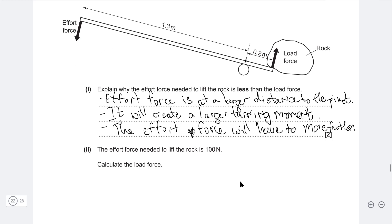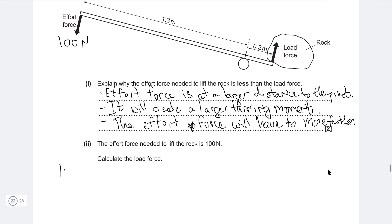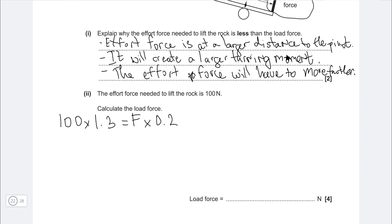Our anticlockwise moment is created by this effort force. So this effort force is 100 newtons. And I'm going to write that 100 newtons times its distance to the pivot point, which is 1.3 meters, will be equal to the other force that we're looking for, the load force. I'm just going to call that F multiplied by its perpendicular distance to the pivot, which is just 0.2.